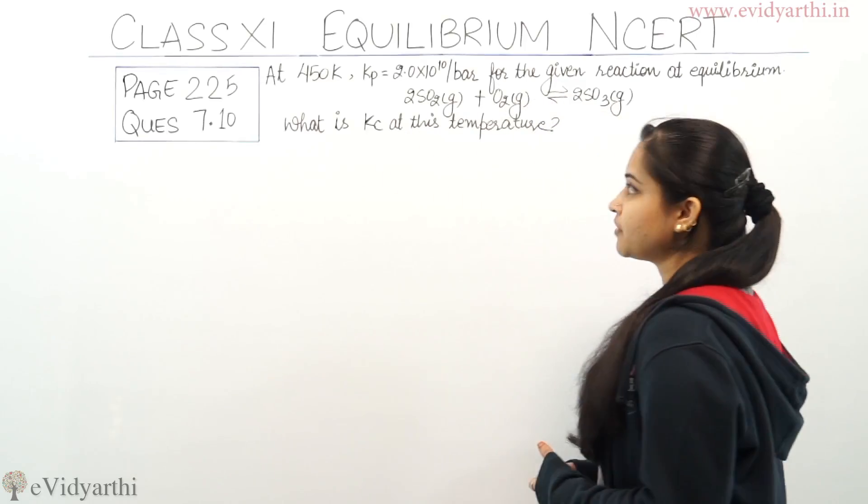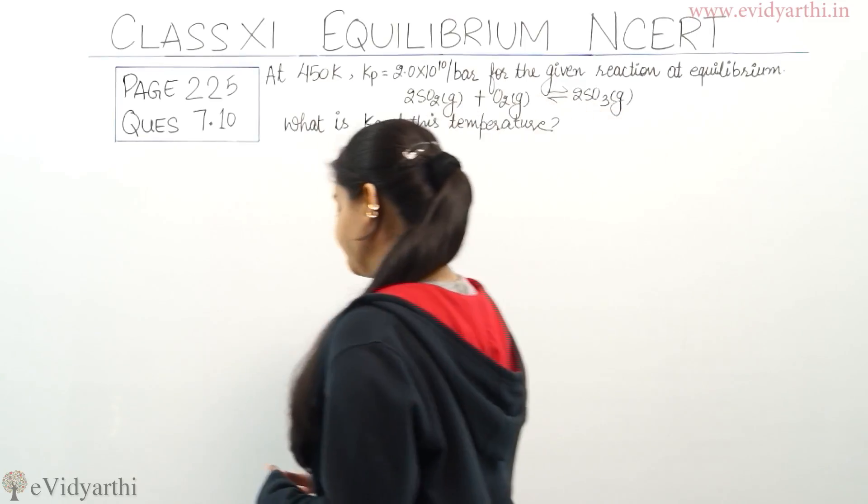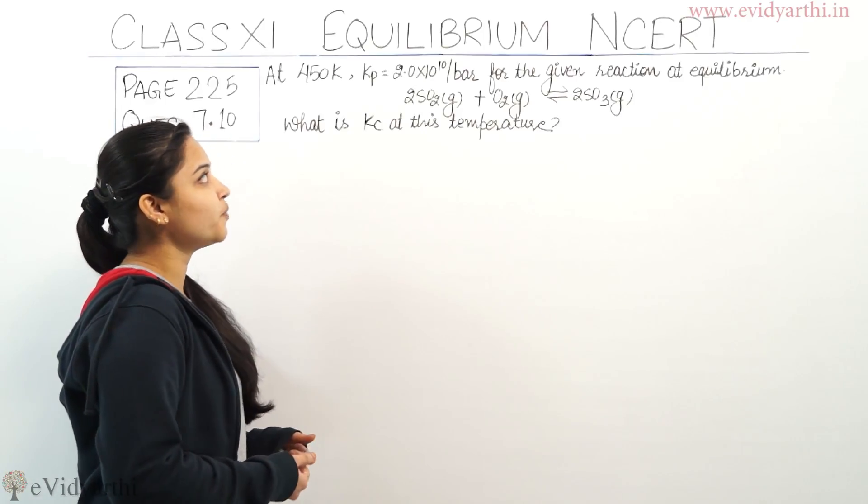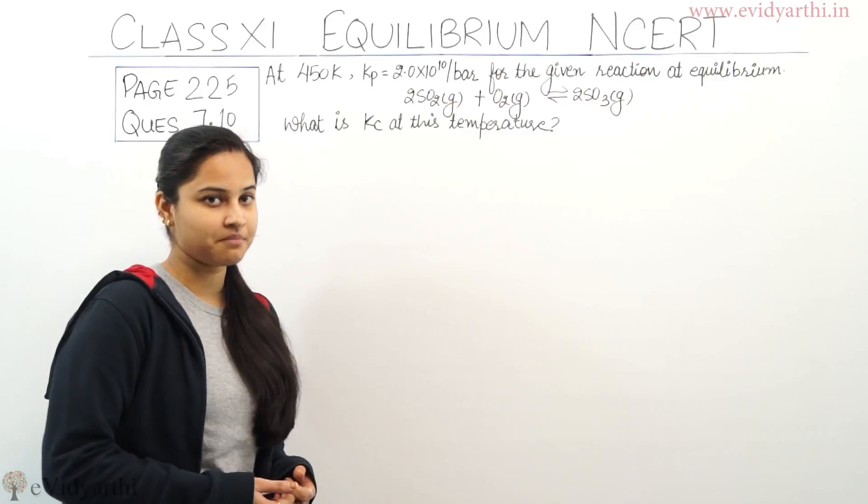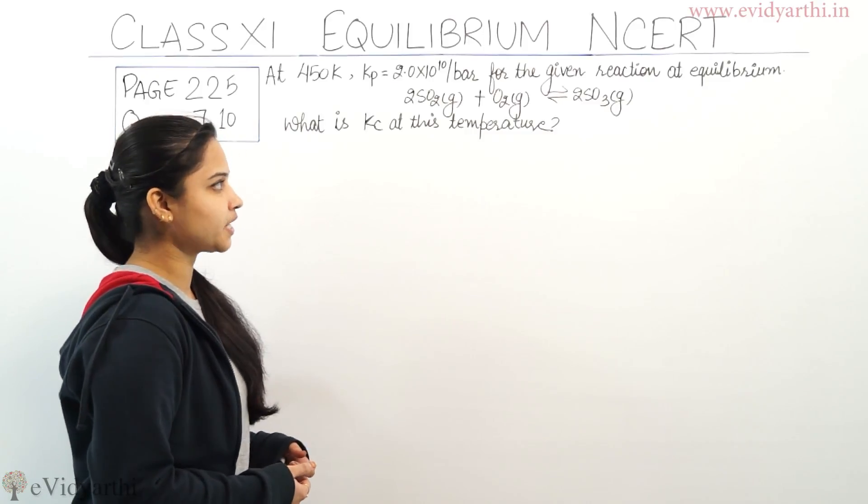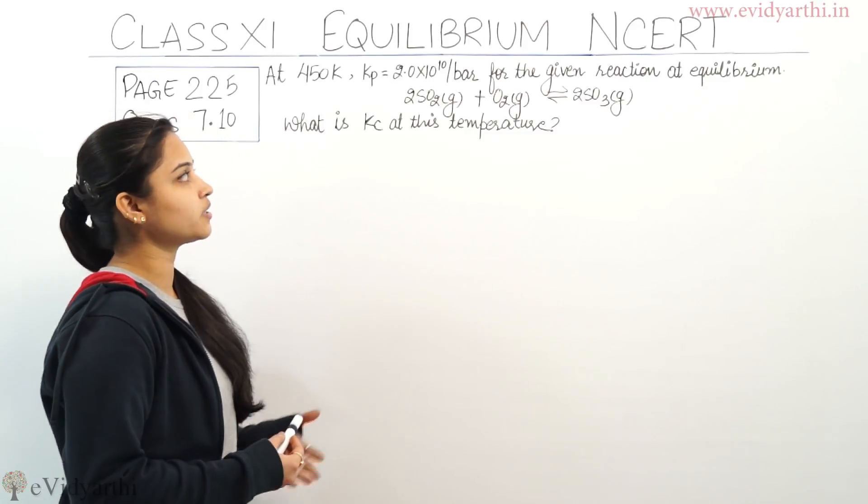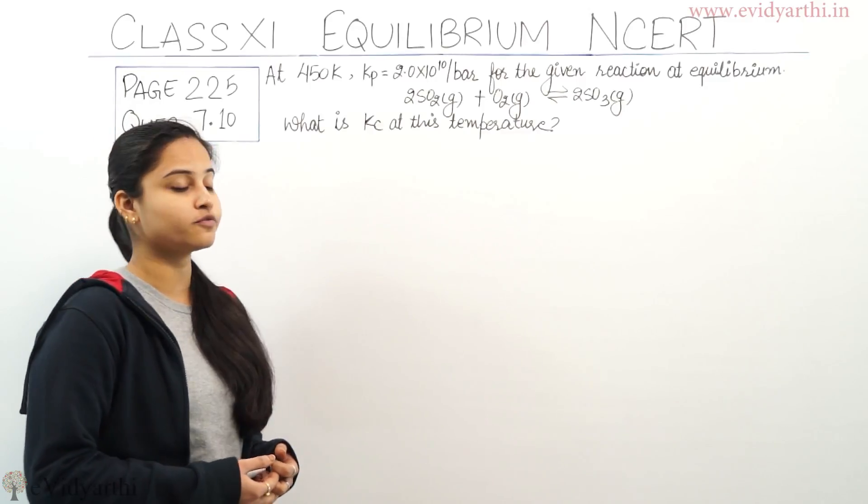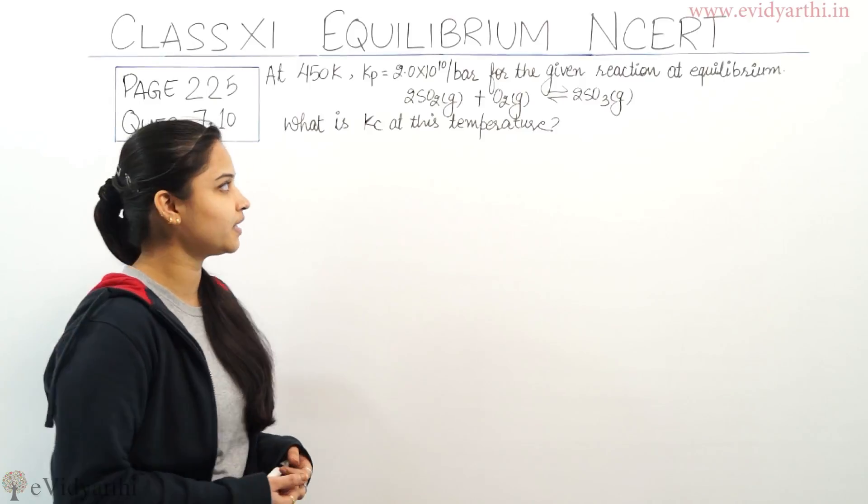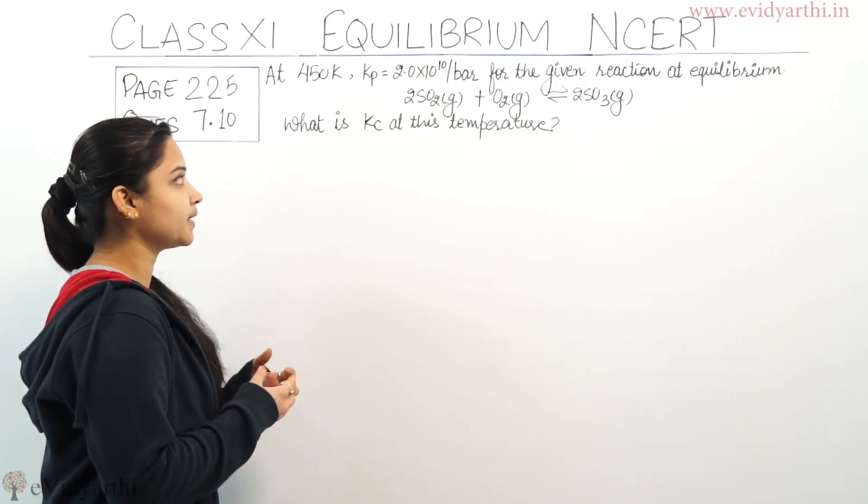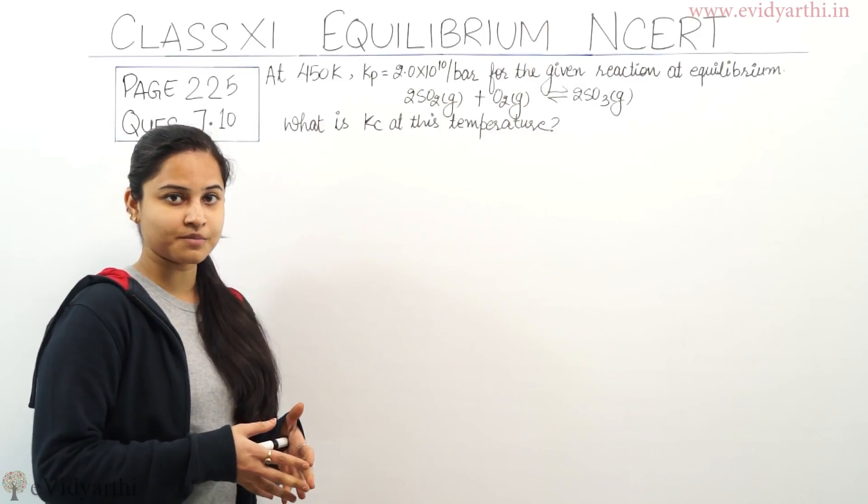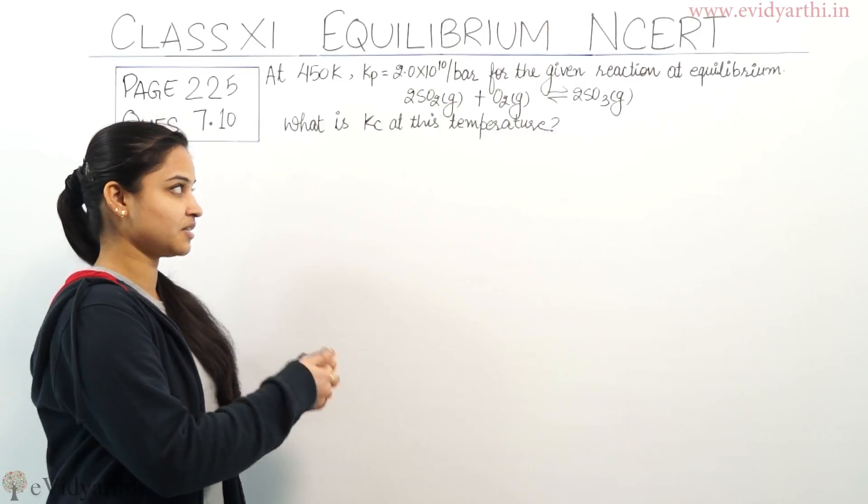The question is: at 450 Kelvin, Kp (equilibrium constant in terms of partial pressure) is given as 2.0 × 10^10 bar^-1 for the given reaction at equilibrium, which is 2SO2(g) + O2(g) → 2SO3(g). We need to calculate the value of Kc, that means equilibrium constant in terms of molar concentration, at this temperature.